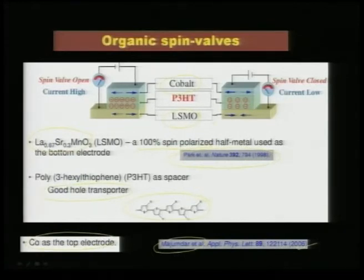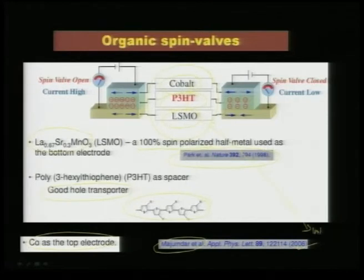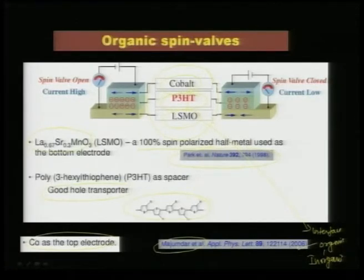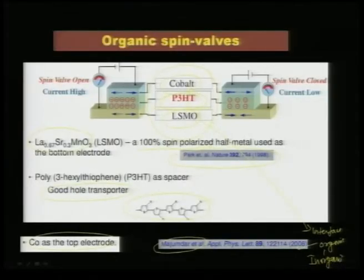This is a typical configuration of an organic spin valve using ferromagnetic electrodes with an organic middle layer. The problems in making this relate to the interface: growing a good organic-inorganic interface is very difficult because the organic layer should wet the inorganic layer, or the inorganic layer has to be atomically flat so that you can make a very thin two-dimensional layer of your organic. Otherwise many such structures could have been realized by now.